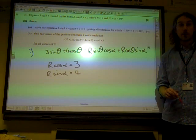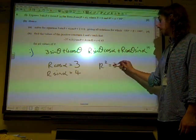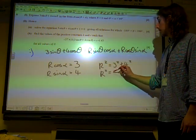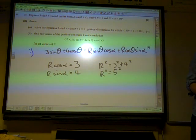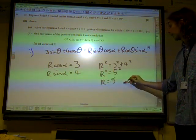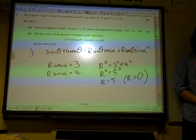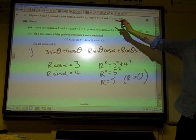We need to eliminate alpha from this, so we're going to square and add. So r squared would be five squared, so r equals five. We're rejecting minus five because, of course, r is greater than zero.